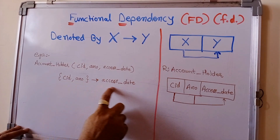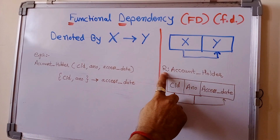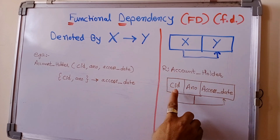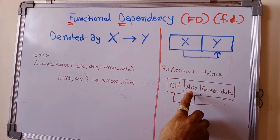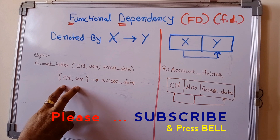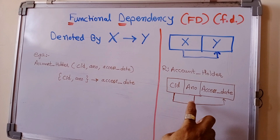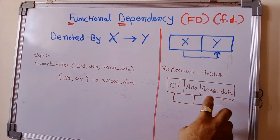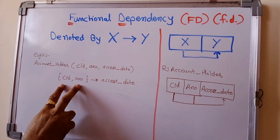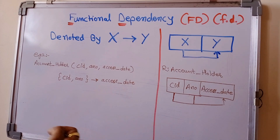These two columns together determine the value of the access date attribute. This can be denoted in a figure: the relation name is account_holder with attributes customer ID, account number, and access date. The arrow starts from customer ID and account number — the determinants — and points to access date, the dependent. So customer ID and account number together define the value of access date.